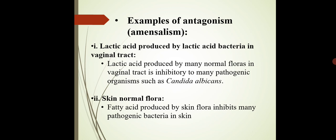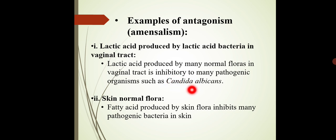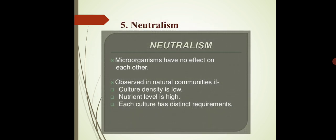Examples of amensalism: First, lactic acid produced by normal flora in the vaginal tract is inhibitory to many pathogenic organisms like Candida albicans. Second, fatty acids produced by skin flora inhibit many pathogenic bacteria. In both cases, one species is harmed while the other is neither harmed nor benefited — a neutral reaction for the second species. This is the example of antagonism or amensalism.